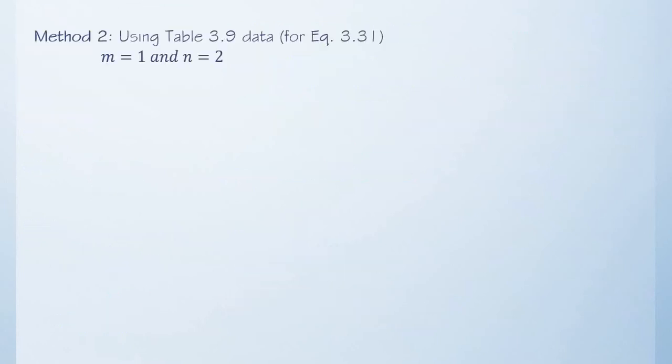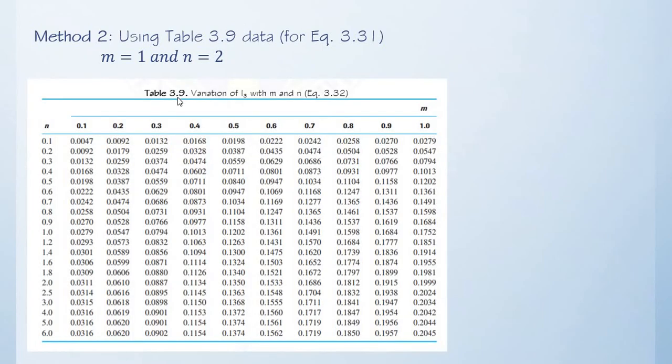Solving the same problem with method 2, that is the use of table in getting the value of I₃. Using table 3.9 variation of I₃ with M and N, M is 1, N is 2. We have here the value of M and we have here the value of N. So, M is 1, N is 2, and that is somewhere here.